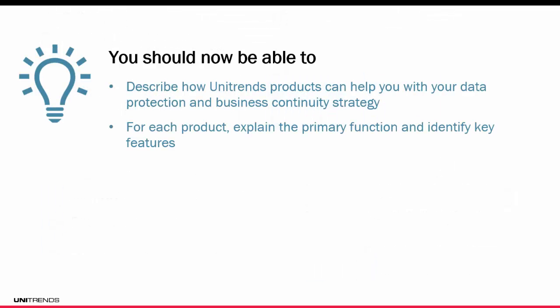Now that you've completed the introduction module, you should be able to describe how Unitrends products can help you with your data protection and business continuity strategy, and for each of these products, you're going to be able to explain the primary function and key features. Thank you so much for listening. The next module, Module 2, is all about how Unitrends is going to back up your environment.